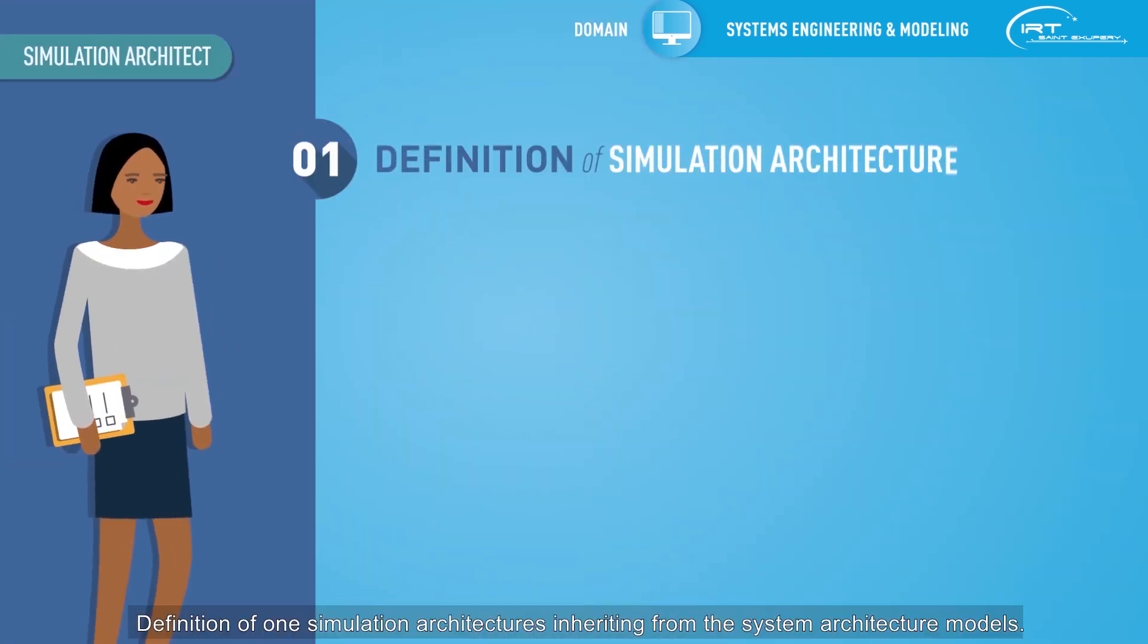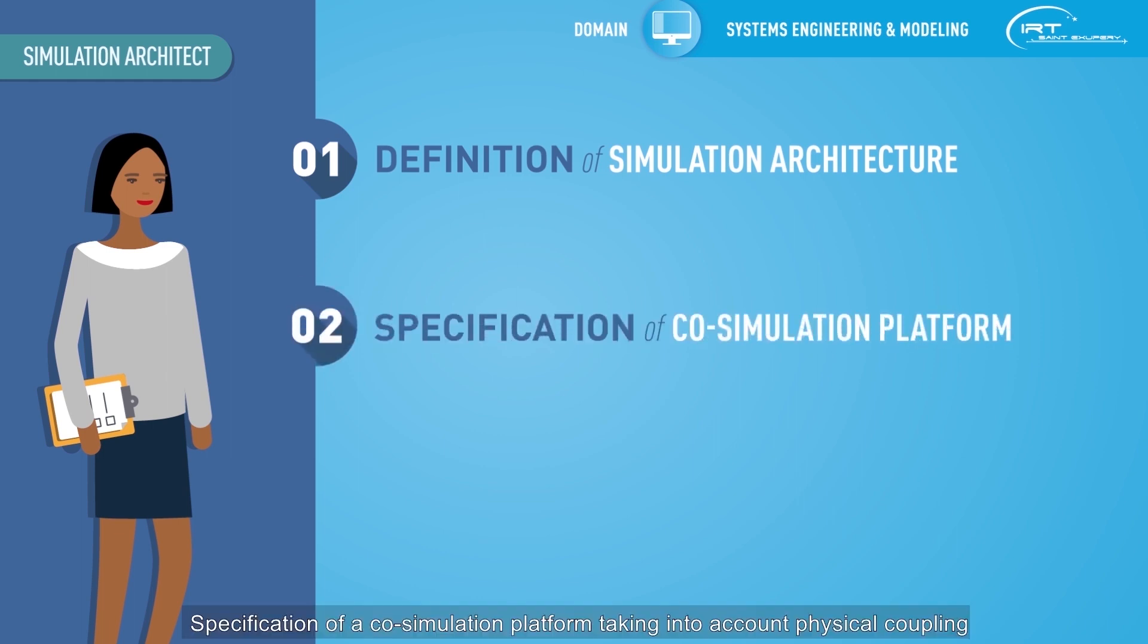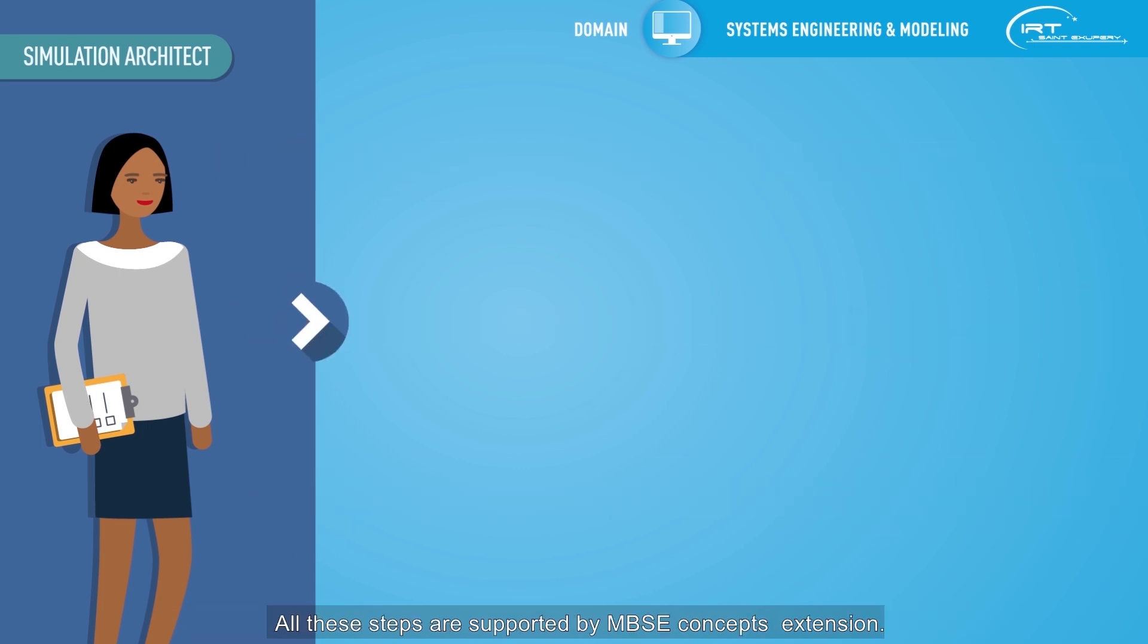Step 1: definition of simulation architectures inheriting from the system architecture models. Step 2: specification of a co-simulation platform, taking into account physical coupling and IT infrastructure constraints. Step 3: specification of quality criteria to limit co-simulation impacts, develop the right models, or assess existing ones. All these steps are supported by MBSE concepts extension.